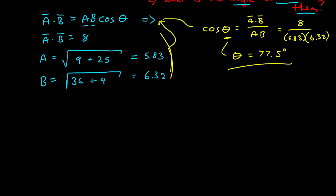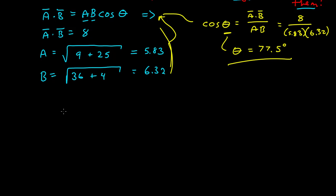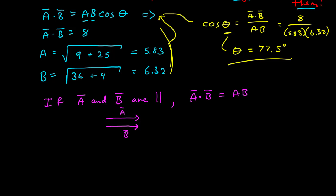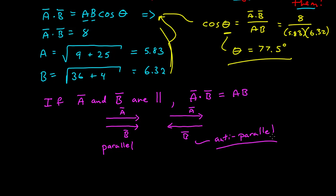I want to explore some properties of the dot product. The dot product of parallel vectors is the product of their magnitudes. When I say parallel, I mean they're pointing in the same direction. We usually refer to the opposite case as anti-parallel — that's the jargon we use to distinguish vectors whose lines are parallel but point in opposite directions. If they're parallel, a dot b is just the product of their magnitudes. If they're anti-parallel, then a dot b is equal to negative the product of their magnitudes.